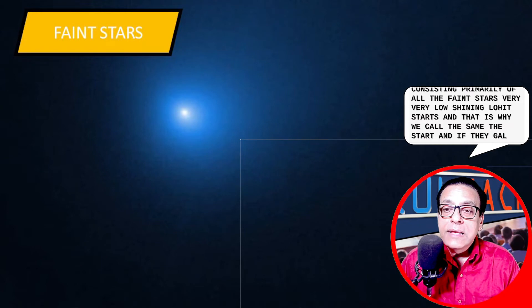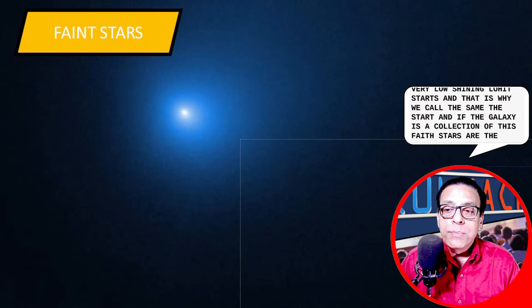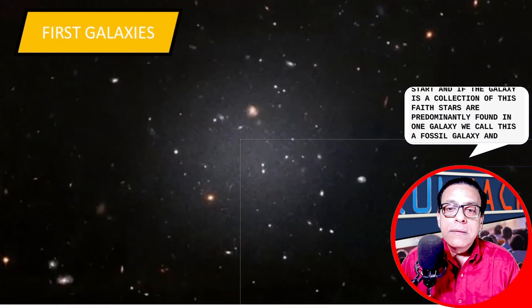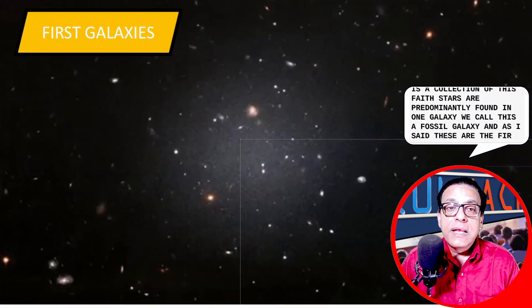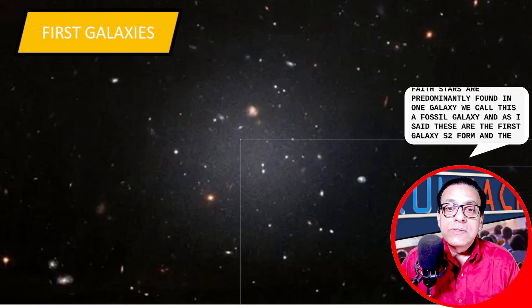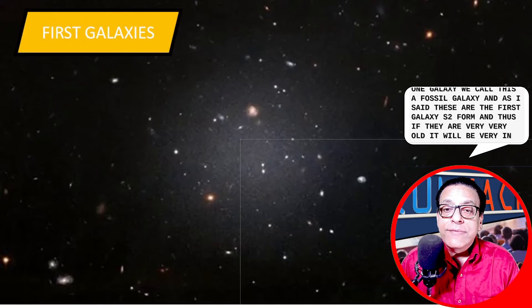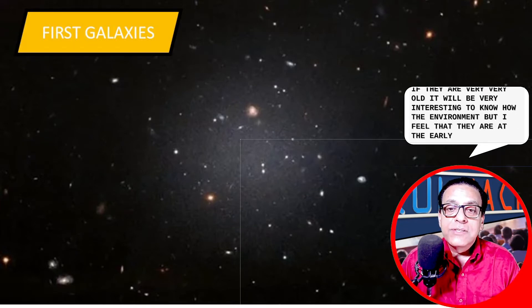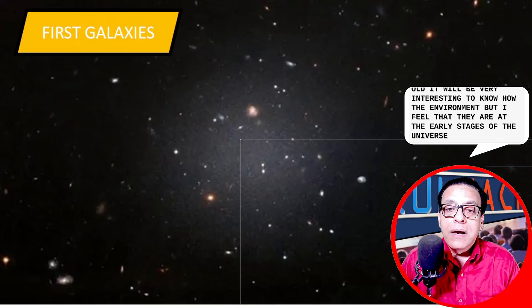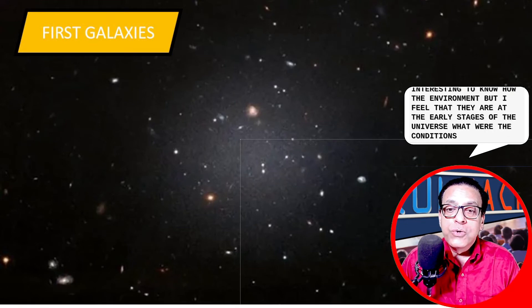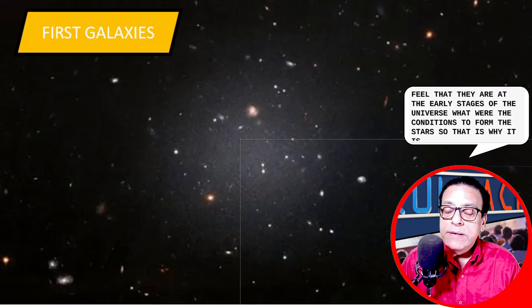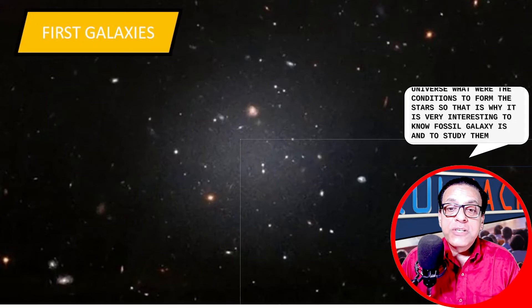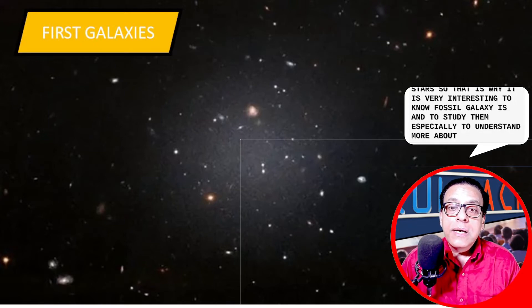And if the collection of these faint stars are predominantly found in one galaxy, we call this a fossil galaxy. And as I said, these are the first galaxies to form. And since they are very old, it will be very interesting to know how the environment would have been at the early stages of the universe. What were the conditions to form these stars? So that is why it is very interesting to know the fossil galaxies and to study them, especially to understand more about the early universe.